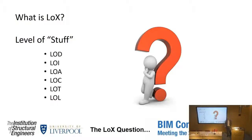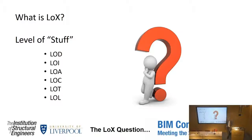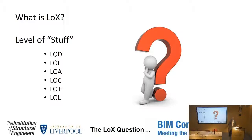LOD — what does LOD mean? Level of definition? Level of detail? Both hands went up — everyone's a winner! LOI: level of information. LOA: level of accuracy. LOC: level of control, level of content, level of concrete — spot the structural engineer in the room! Also level of clash, level of coordination, level of completeness, level of connectivity — all of them are used out there in the industry. LOT — is that a Russian airline? That's the trick question: level of tolerance. And LOL? Level of location actually — it exists out there.